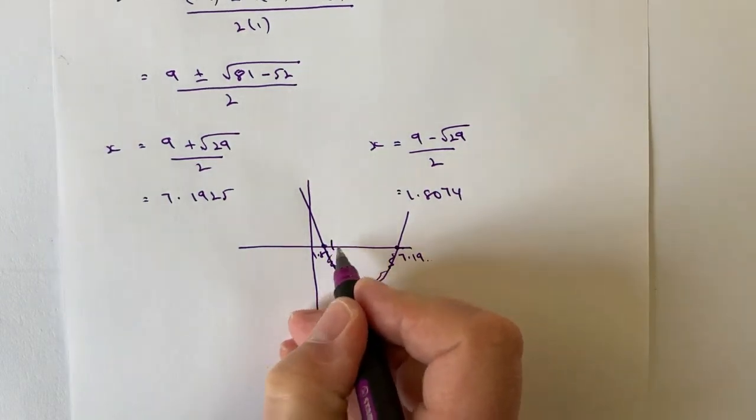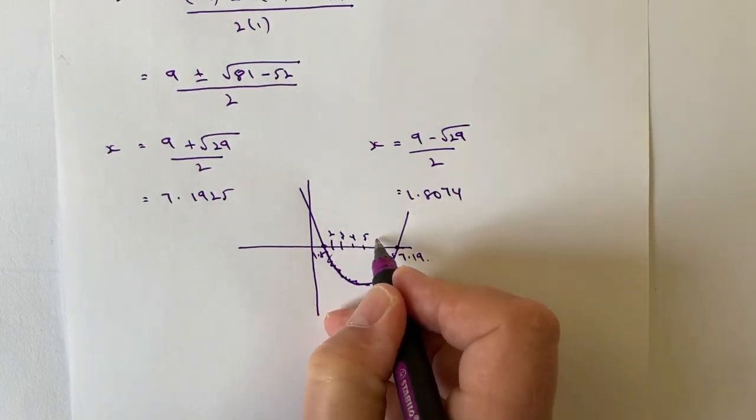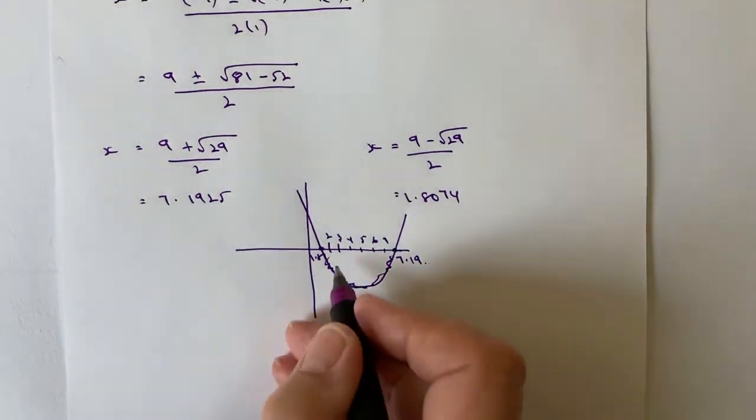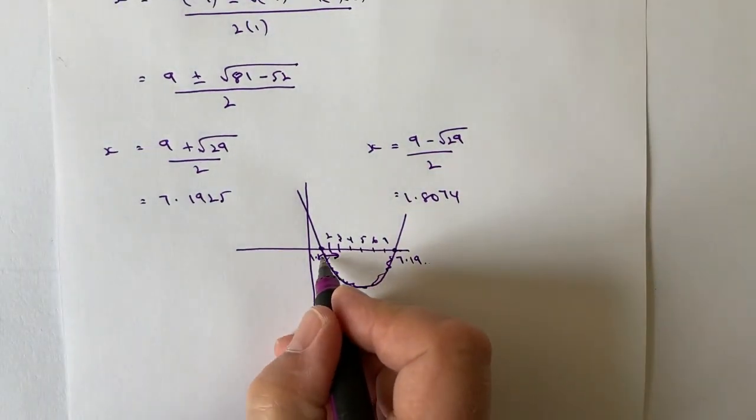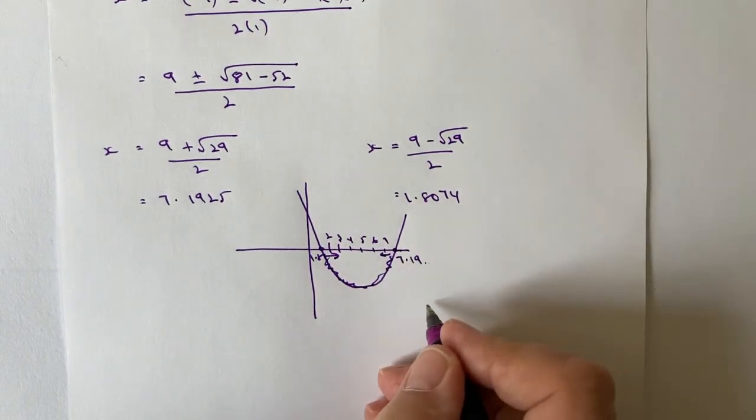So it's all the whole number values: 2, 3, 4, 5, 6, and 7. All of these values are whole number values between 1.8 and 7.19.